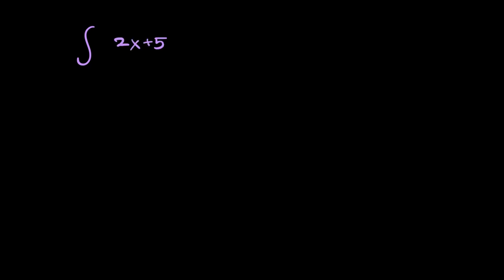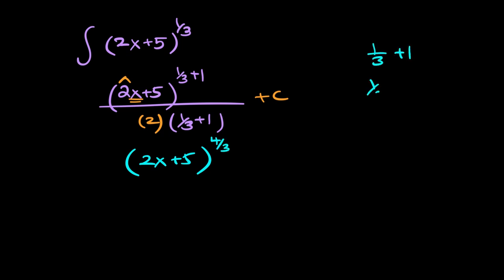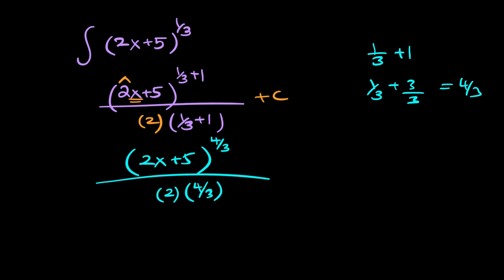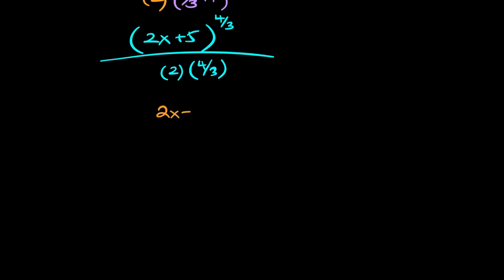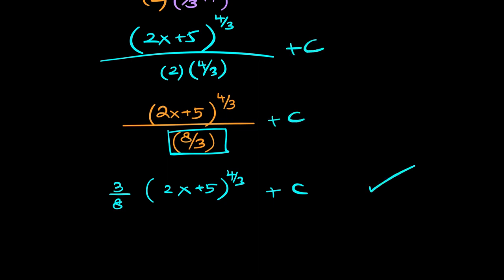Now integrate (2x + 5)^(1/3) dx. Increase the power: 1/3 + 1 = 1/3 + 3/3 = 4/3. Divide by the new power 4/3 and don't forget to divide by the coefficient of x, which is 2. So the denominator becomes 4/3 × 2 = 8/3. Flipping gives 3/8, so the result is (3/8)(2x + 5)^(4/3) + c.